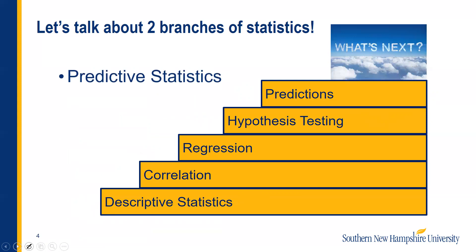Then we have a predictive statistics branch — and there are more branches as well, but we're going to talk about predictive statistics now. It all starts again with those descriptive statistics. We're still going to look at things like averages and graphs in order to understand what an average is and what it tells you. But when we start looking at predicting, we look at things that are linked together. We might have two different groups of data and want to know if they're connected — if change happening in one also happens in the other at the same time. That's called correlation.